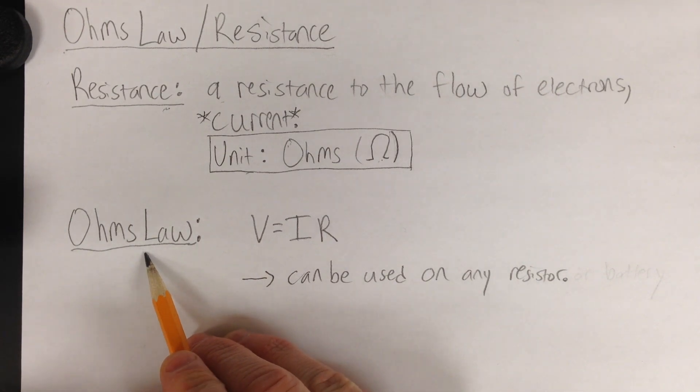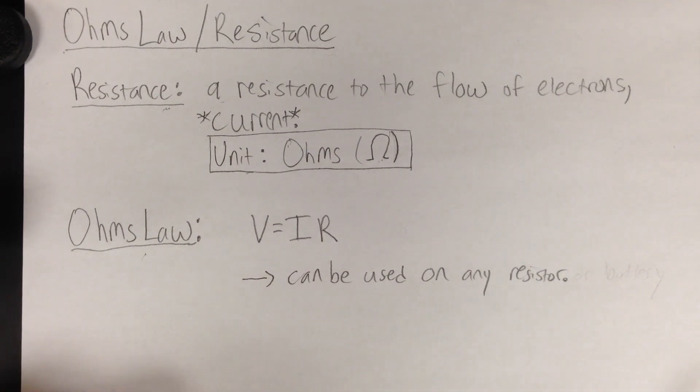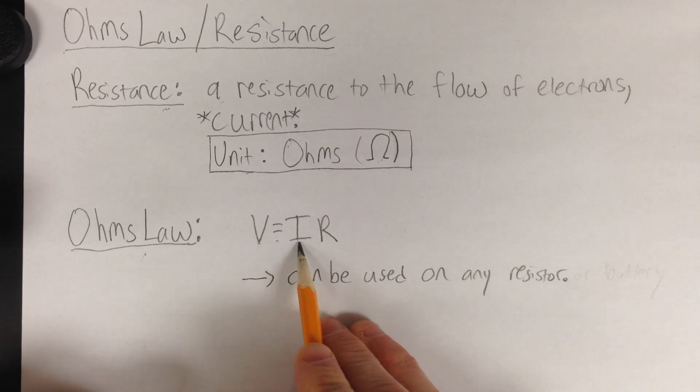Ohm's Law is the equation we're going to be using with resistance. It relates voltage, current, and resistance. So Ohm's Law is V equals I R.